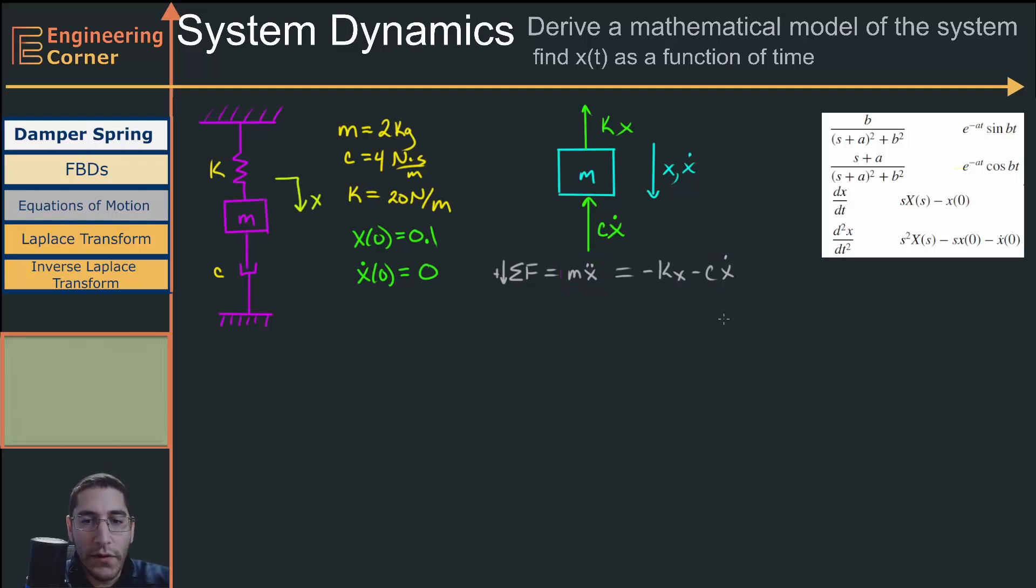So what I want to do is put in these different numbers that I have. I'm going to have 2x double dot, and I'm going to bring these over to the other side of the equation. So then plus 4x dot plus 20x equals zero. So now this is a second order differential equation. I've chosen to do a Laplace transform.